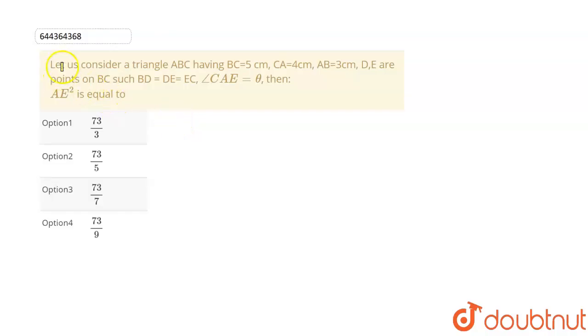Here the given question is, let us consider a triangle ABC having side BC equal to 5 cm, CA is equal to 4 cm, AB equal to 3 cm.